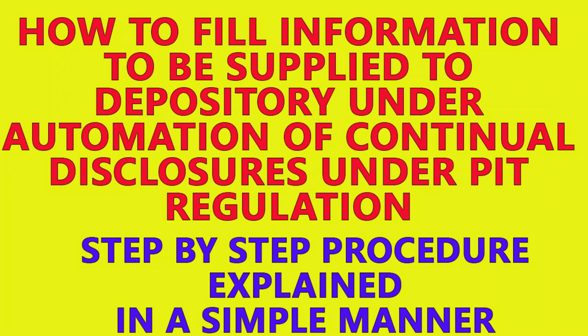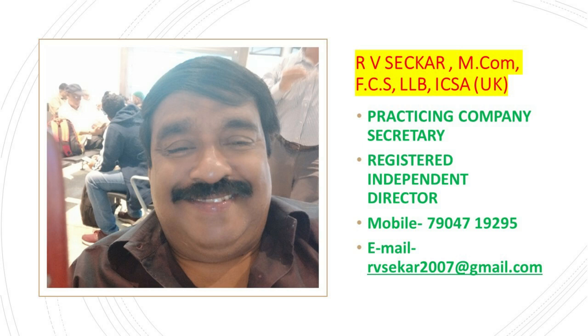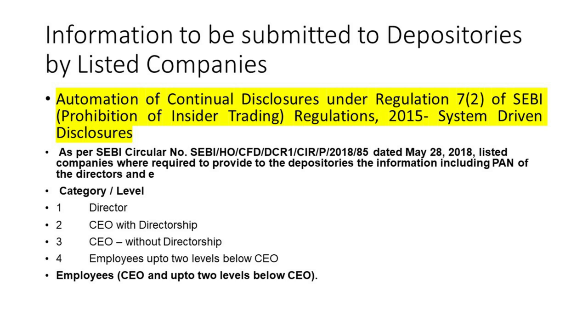Dear friends, in this video I am going to discuss about the information to be submitted to depositories by listed companies. Automation of Continual Disclosures under Regulation Section 2 of the SEBI Prohibition of Insider Trading Regulation 2015. System-driven disclosures have to be made to depositories. As per SEBI Circular number SEBI 85 dated May 28, 2018, listed companies were required to provide to the depositories the information including PAN of the Directors and other categories.